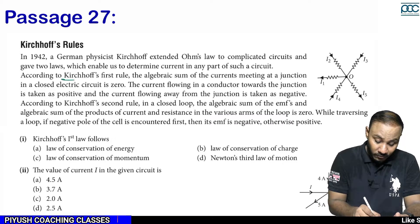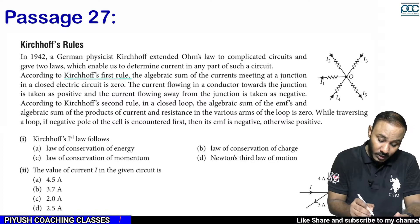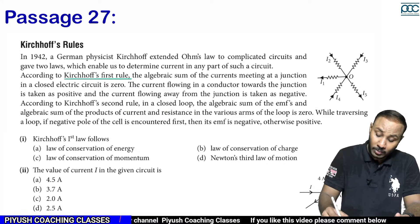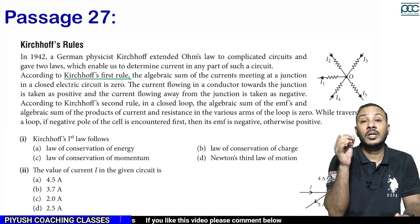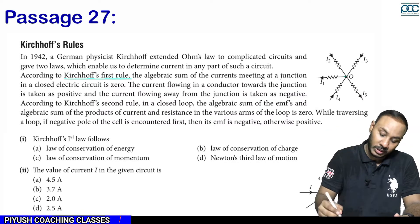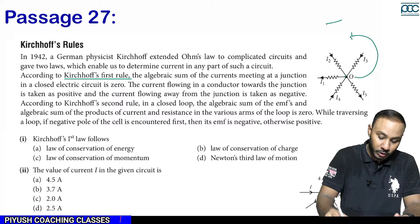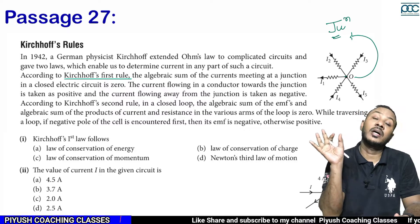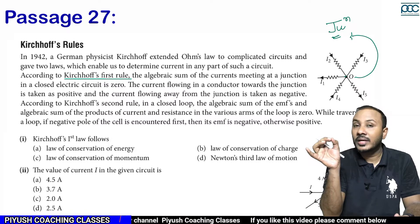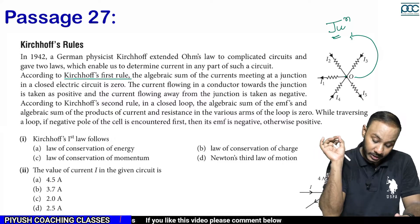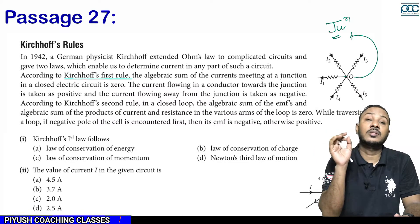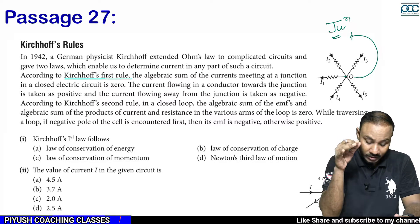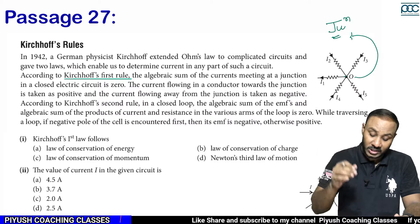According to Kirchhoff's first rule, the algebraic sum of currents meeting at a junction in a closed electric circuit is zero — where more than two conductors meet, which we call a junction. The current flowing towards the junction is taken as positive and the current flowing away from the junction is taken as negative.